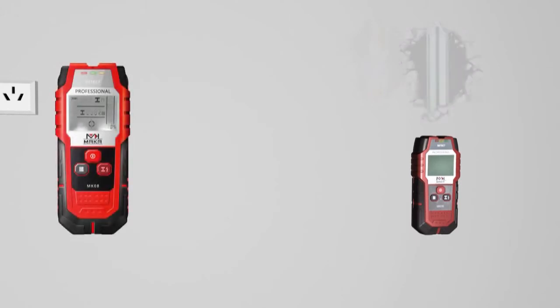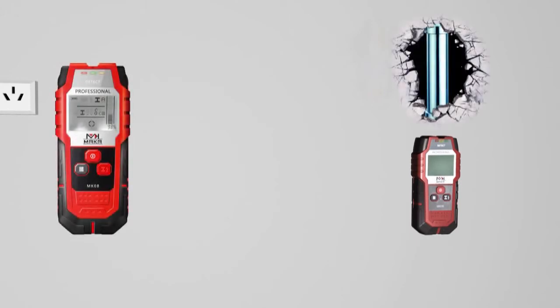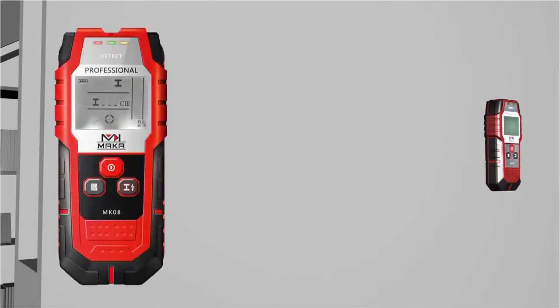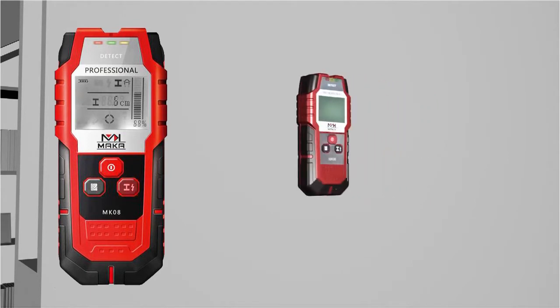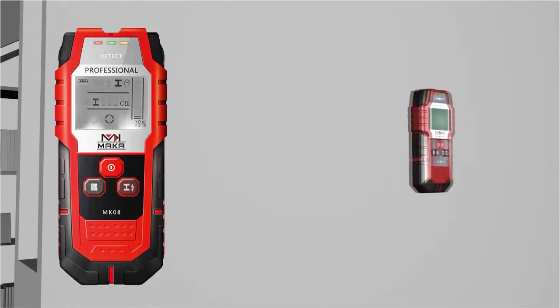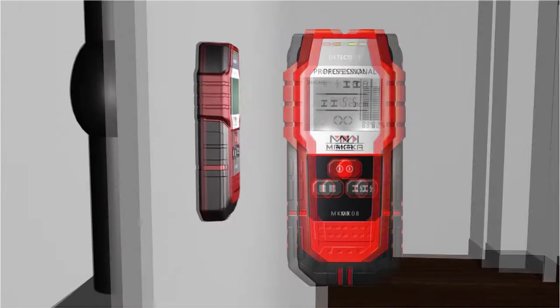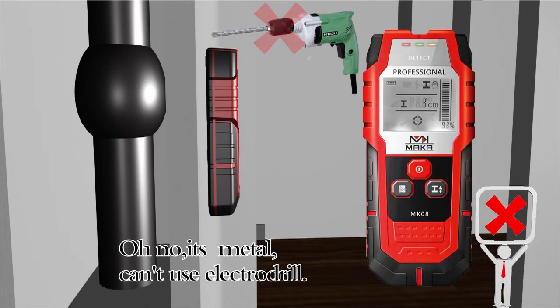Put the detector on the surface of detected article and move it in the same direction. When the instrument gradually closes to metal article, the display scale on G of the screen will show an increase in scale and the strength percentage will increase gradually. When the instrument leaves the metal article gradually, the display scale will decrease slowly and the strength percentage will decrease gradually at the same time.